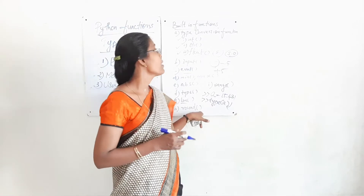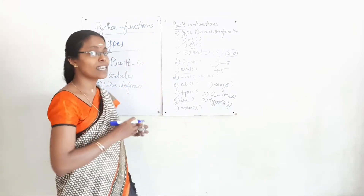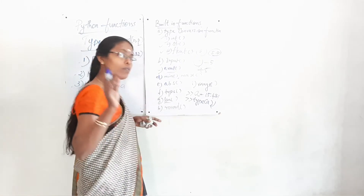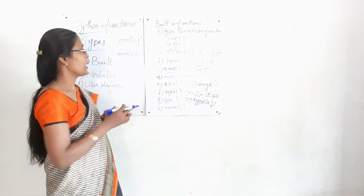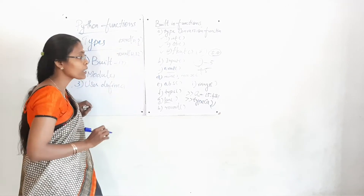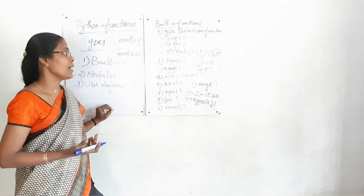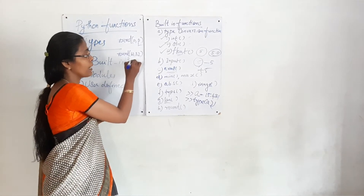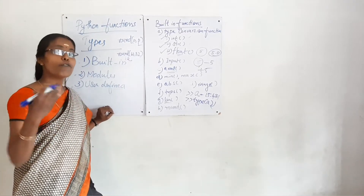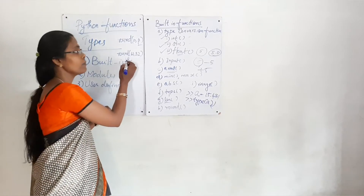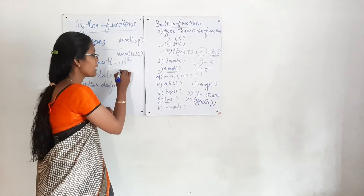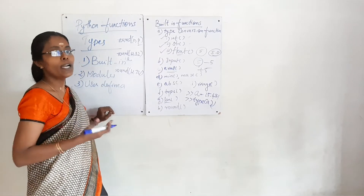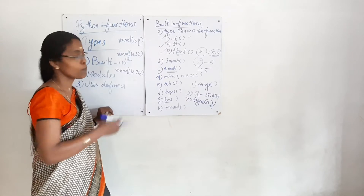Next is the round function. For example, round(12.72, 1) gives 12.7. I will tell you the different usage of round with different decimal places. I will give you more examples with that.